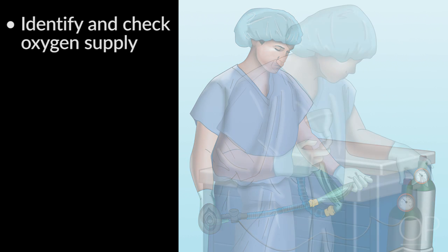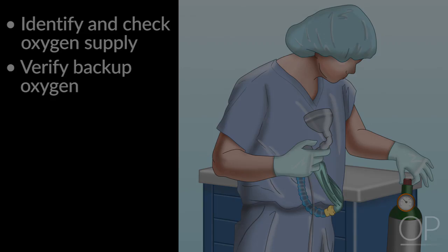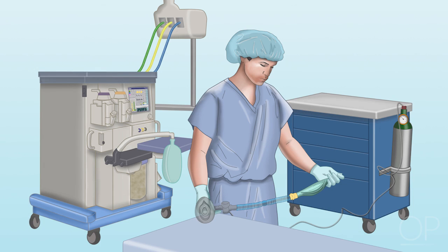No matter what setting you are practicing in, oxygen supply must be identified and checked for sufficient amount. Ideally, a backup source of oxygen should be immediately available and verified, particularly if an oxygen concentrator is the primary source. It is essential to have sufficient length of oxygen tubing to reach the patient from a secondary source of oxygen.